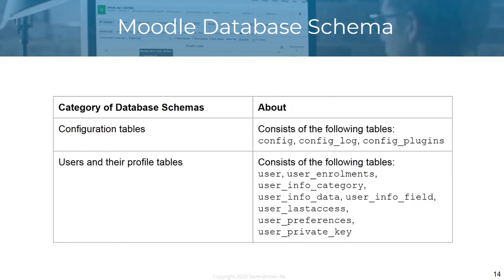There are a few categories of database schemas. Configuration tables consist of tables related to the configuration of Moodle — you have the config table, the config log table, and the config plugins table.